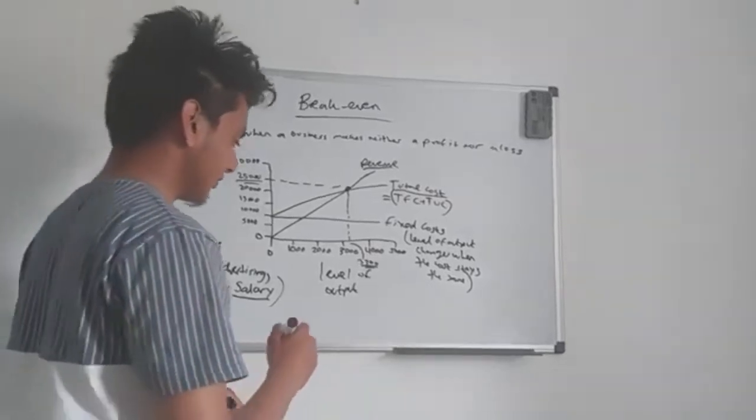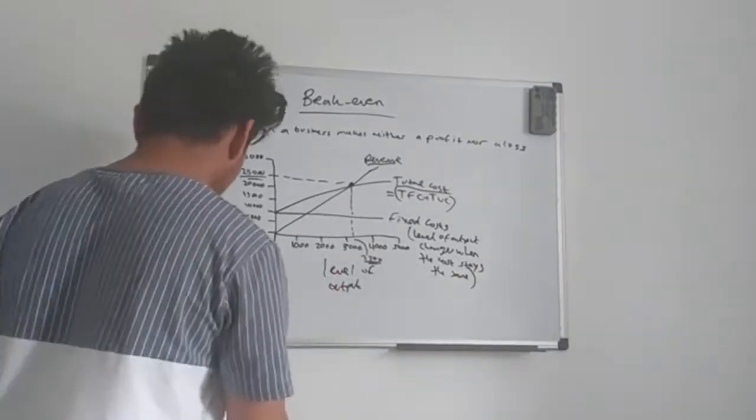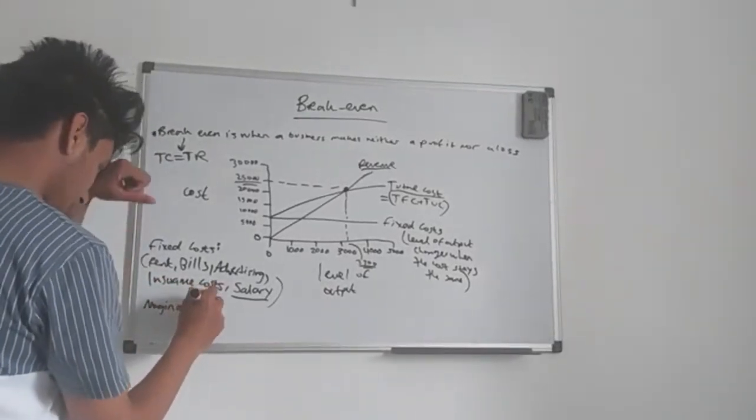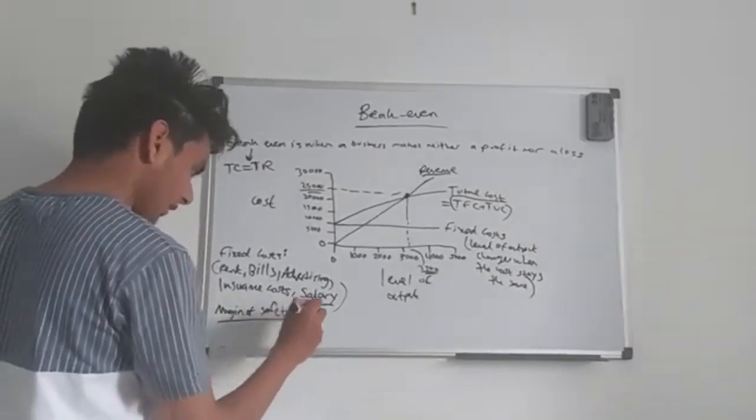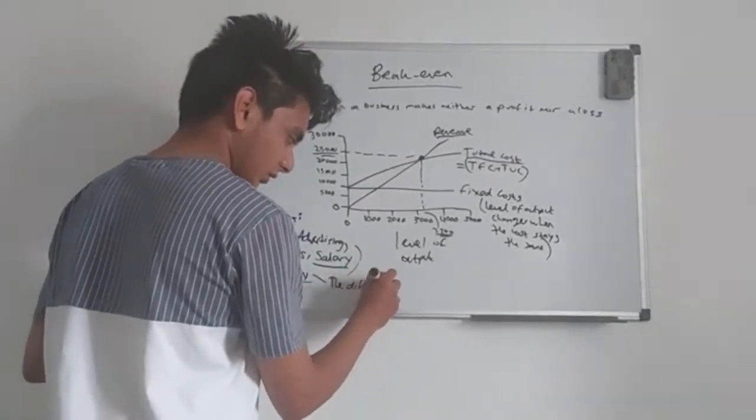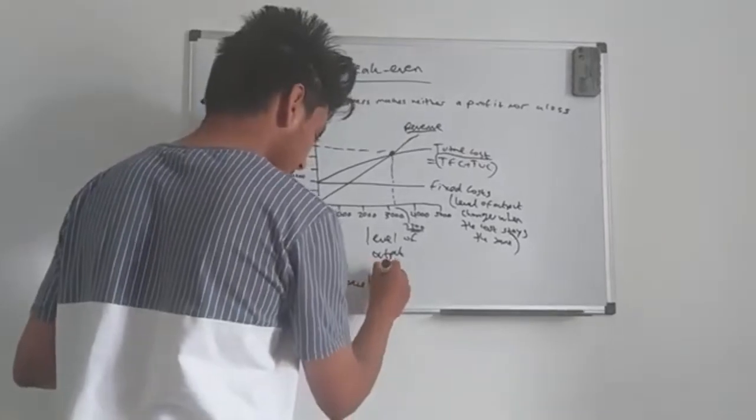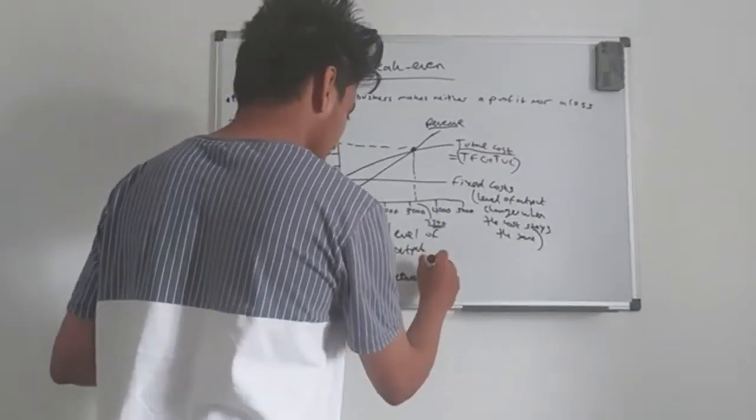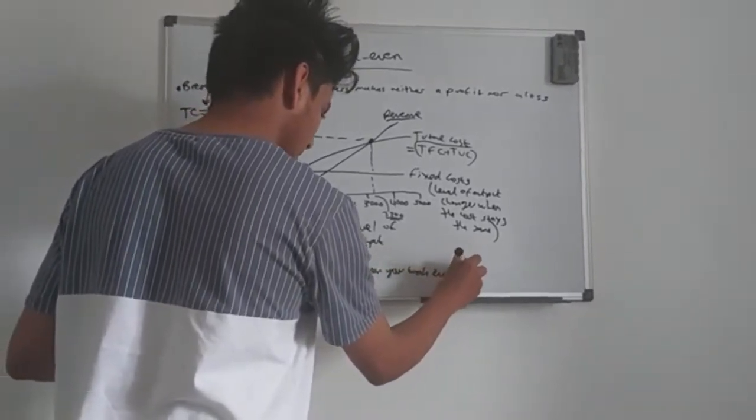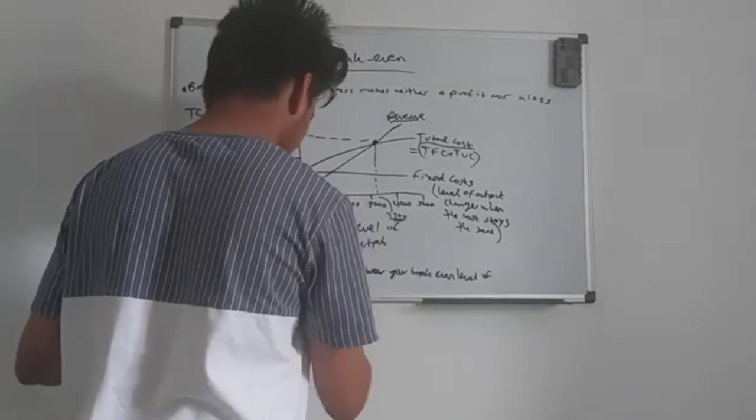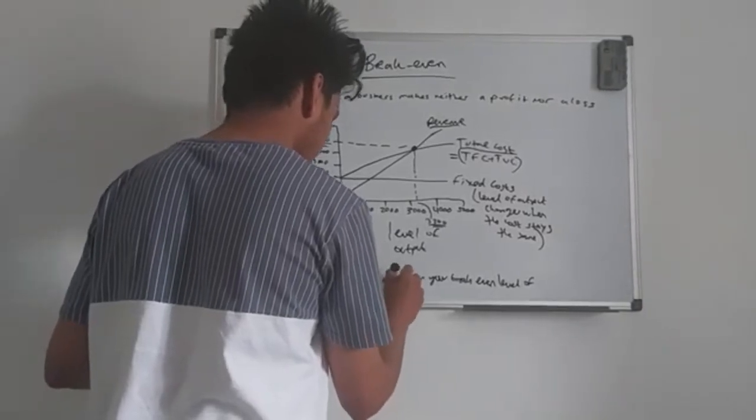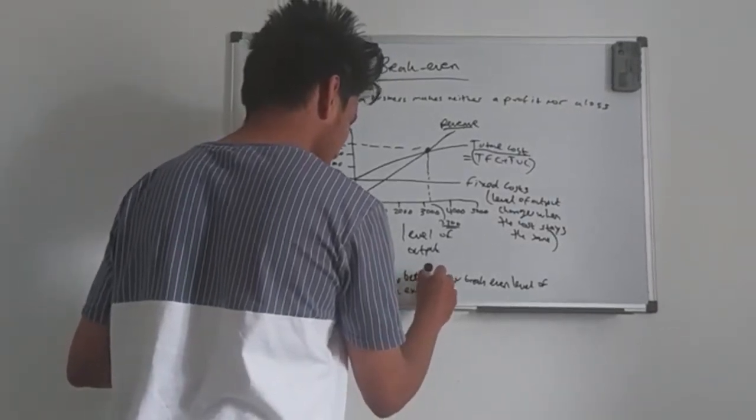Margin of safety. And what that is, is the difference between your break-even level of output and the extra output produced from that break-even.